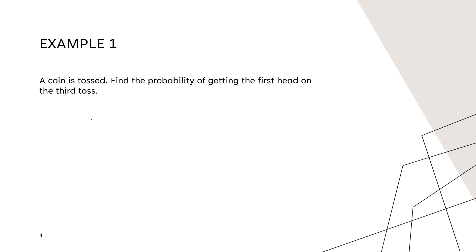Example number one: a coin is tossed. Find the probability of getting the first head on the third toss. First, we need to identify p, the probability of success. When you toss a coin, the probability of success is one half, because there is one head out of two possible outcomes: head or tail.